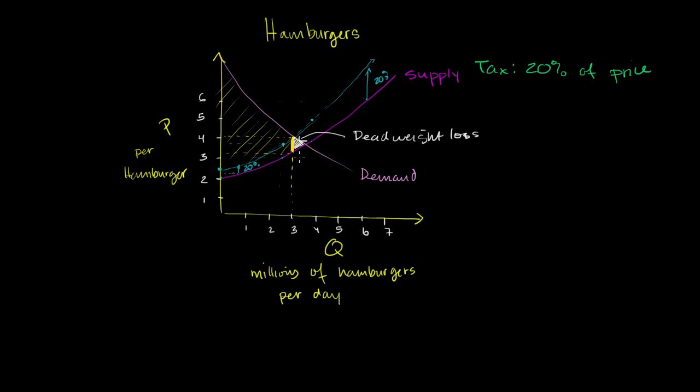So this height right over here is $0.60. And the width right over here is 3 million hamburgers. So it's going to be $0.60 per hamburger, which is 20% of its price per hamburger, times 3 million hamburgers. gives us $1.8 million per day.